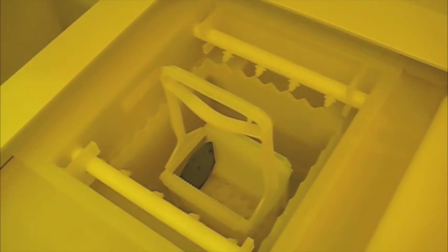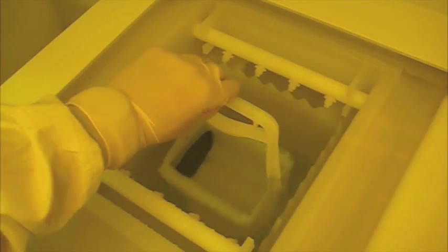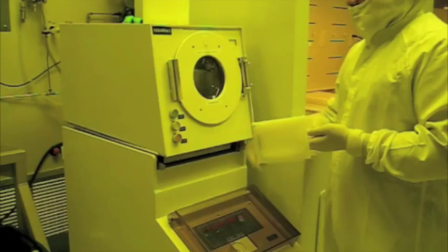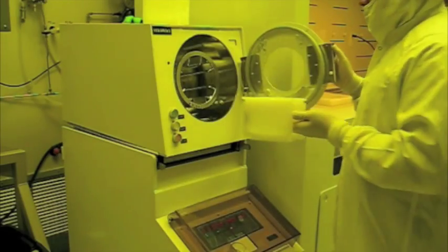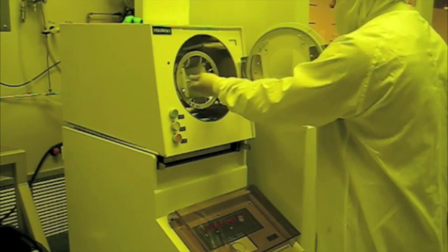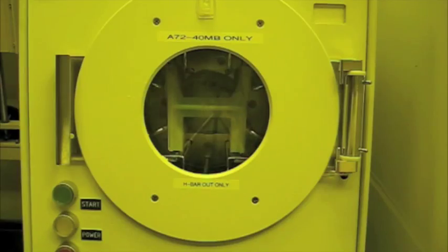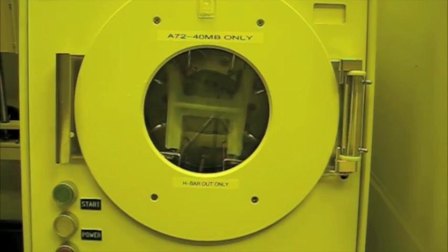A quick dump rinse washes away the alcohol and any other contaminants on the surface of the wafer. The wafer is then dried using a spin rinse dryer rotating at 2200 RPM.